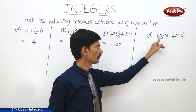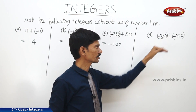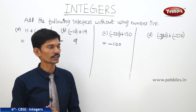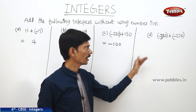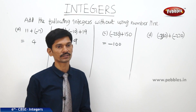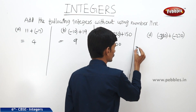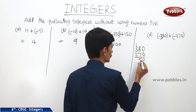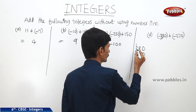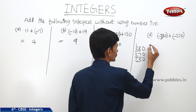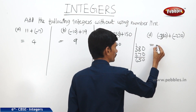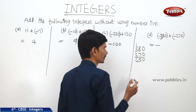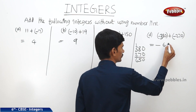Next, (-380) plus (-270). Here two negative integers are added. We add them as whole numbers: 380 plus 270 equals 650, and the result takes the minus sign, so the answer is minus 650.